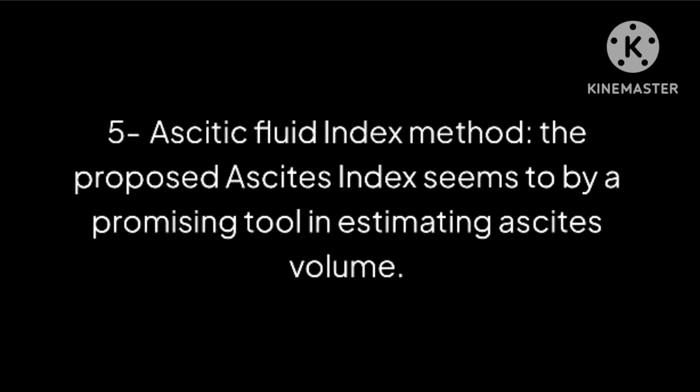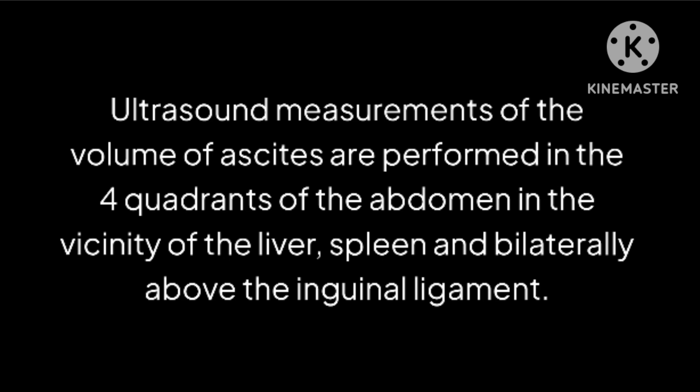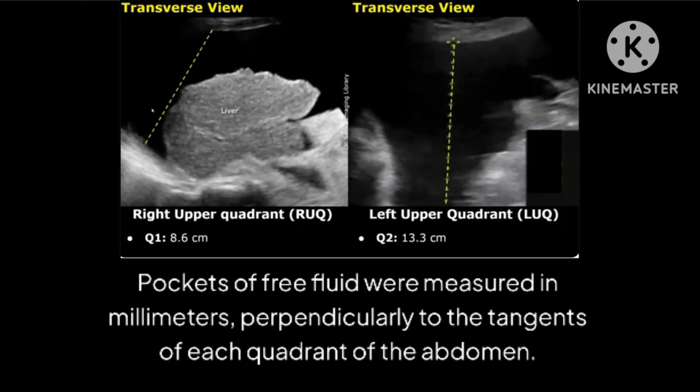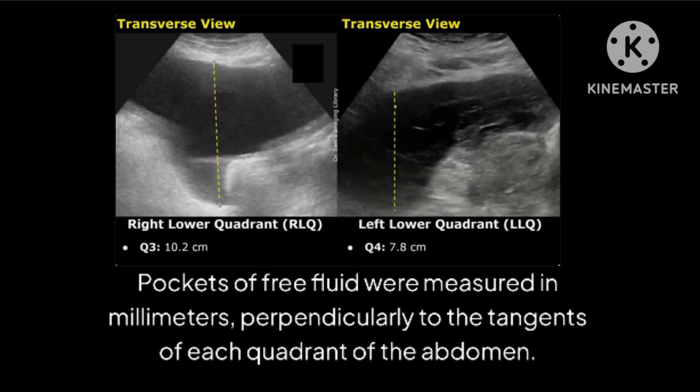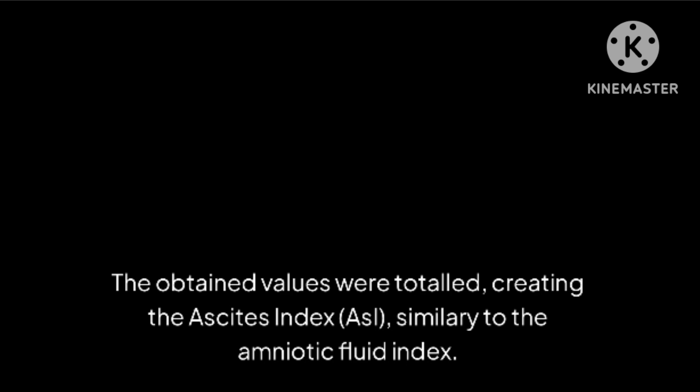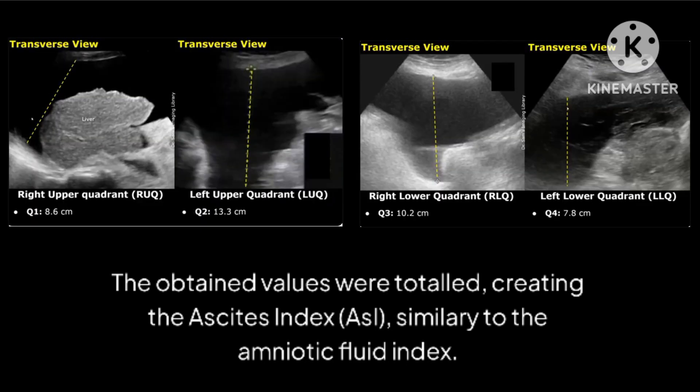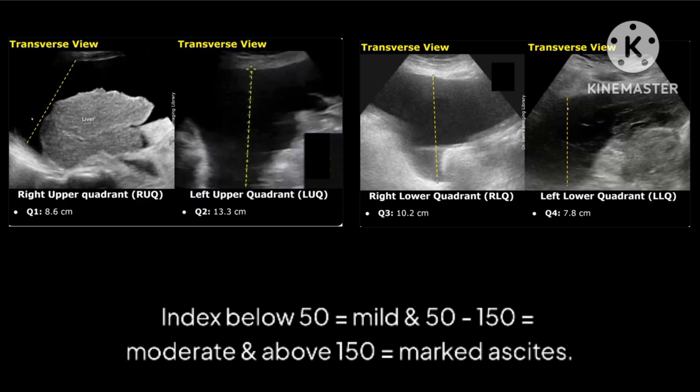Method 5: Ascites Fluid Index method. The proposed ascites index seems to be a promising tool in estimating ascites volume. It is simple to implement and may be estimated using basic ultrasound equipment. Ultrasound measurements are performed in the four quadrants of the abdomen in the vicinity of the liver, spleen, and bilaterally above the inguinal ligament. Pockets of free fluid are measured in millimeters perpendicularly to the tangents of each quadrant, and the obtained values are totaled creating the ascites index, similarly to the amniotic fluid index. Index below 50 equals mild, 50 to 150 equals moderate, and above 150 equals marked ascites.